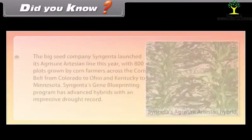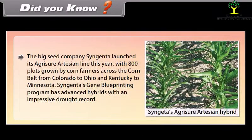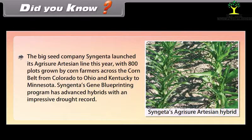Did you know? The big seed company Syngenta launched its Agritio Artesian line with 800 plots grown by corn farmers across the corn belt from Colorado to Ohio and Kentucky to Minnesota. Syngenta's gene blueprinting program has advanced hybrids with an impressive drought record.